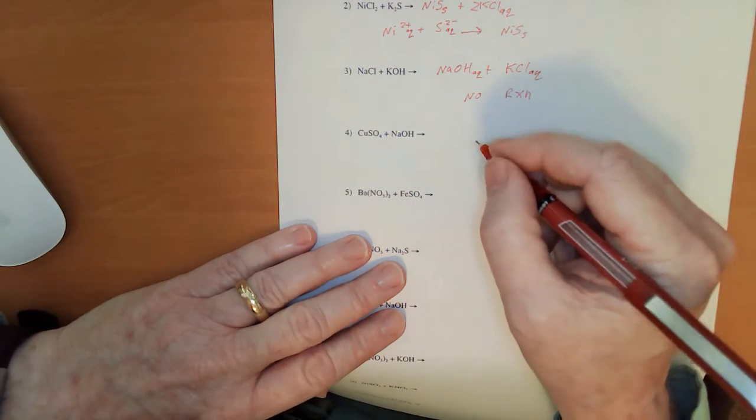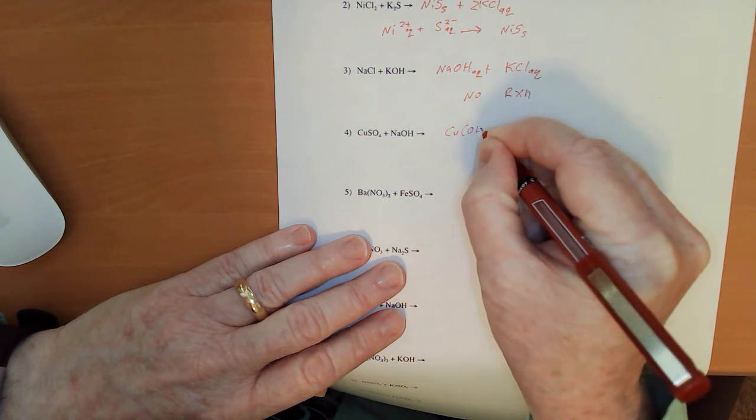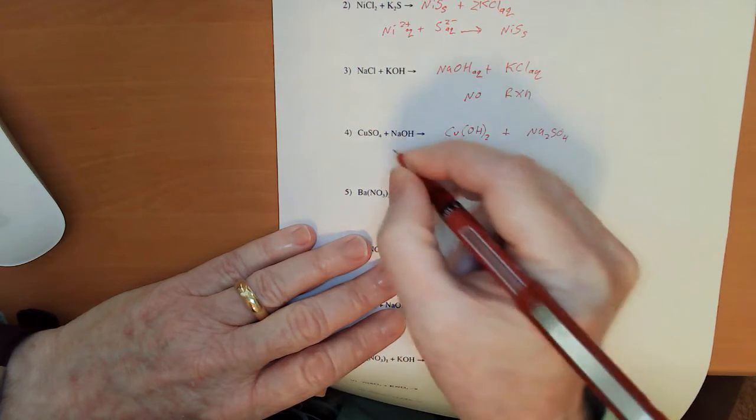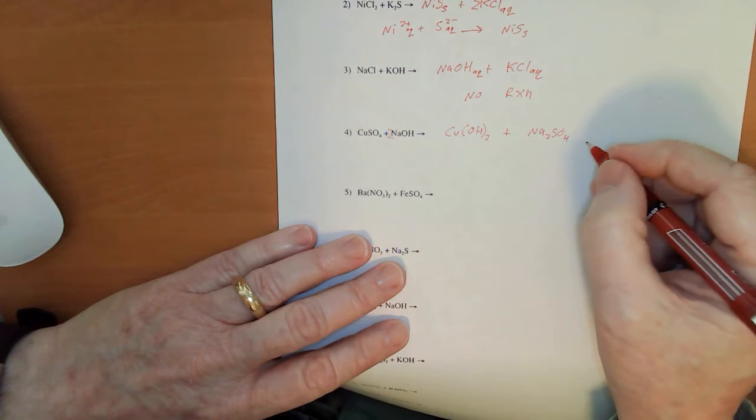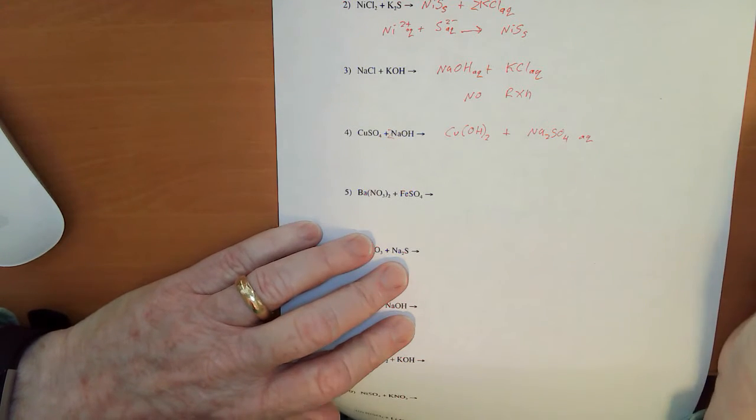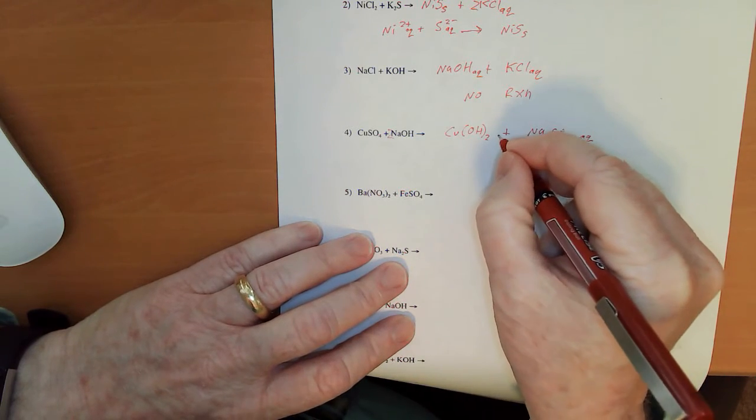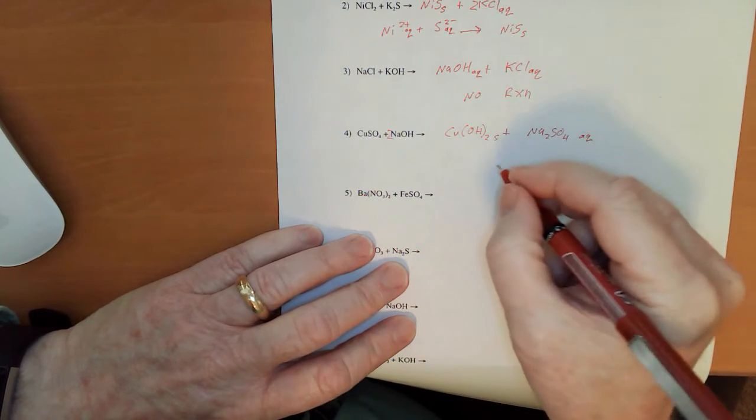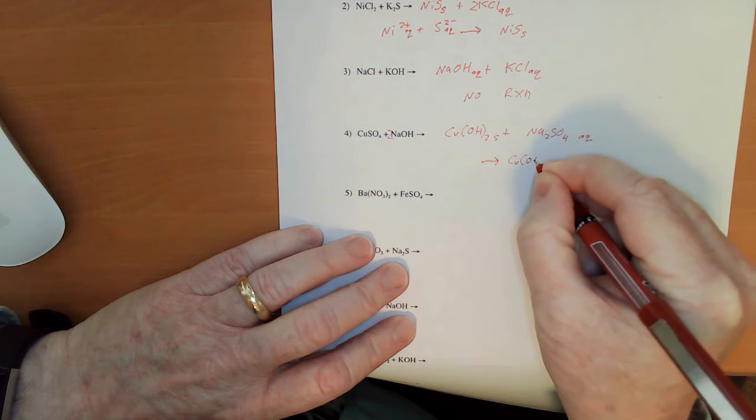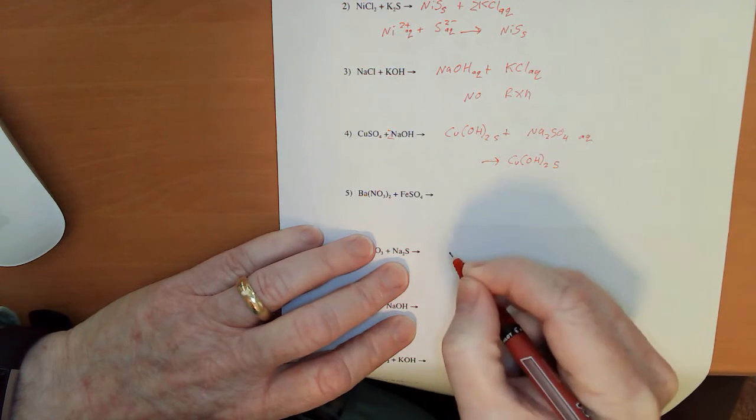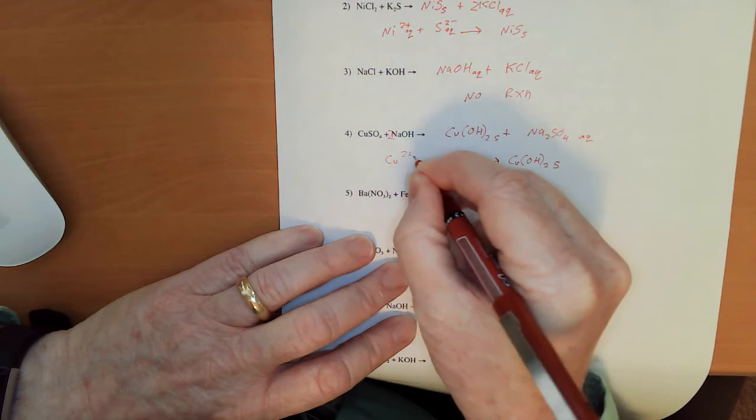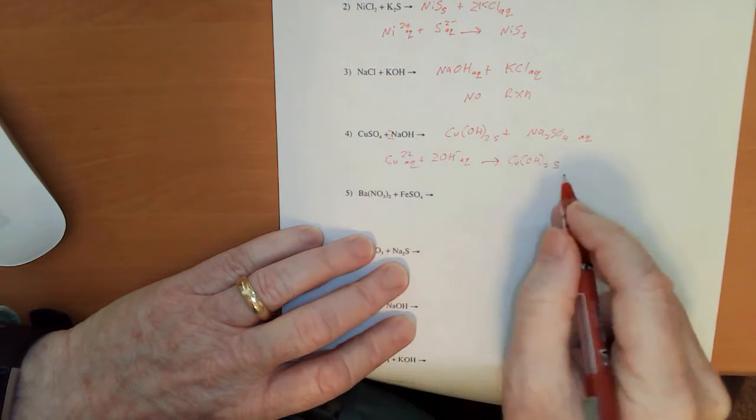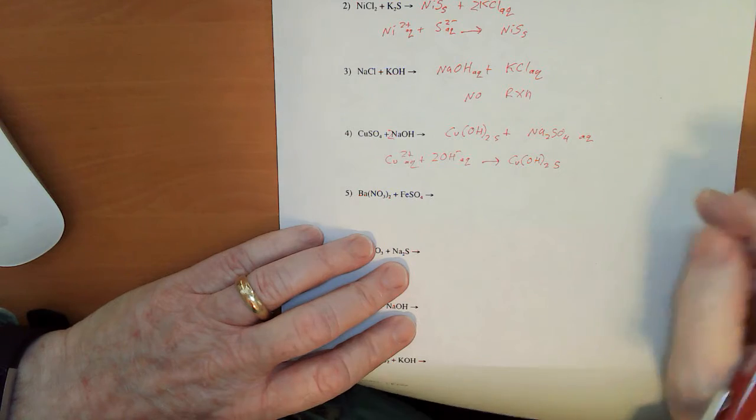Next one down here, number 4. Partner exchange, Cu OH sub 2, plus Na2SO4. I'm going to need a 2 in front of my NaOH. So, this has got a group 1 metal. Those are always aqueous. They're always soluble. Copper hydroxide is not. When we're dealing with transition metals and hydroxides, we're getting precipitates. So, our precipitate is Cu OH sub 2 solid. So, I've got a Cu 2 plus, plus 2 OH minus, both of these being aqueous, giving me Cu OH sub 2 solid.